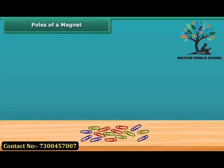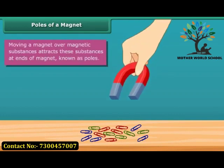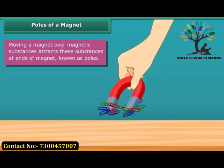When you move a magnet over magnetic substances, you will see that these substances get attracted to particular parts of the magnet only. These are generally the two ends of the magnet. These ends are called the poles of the magnet.